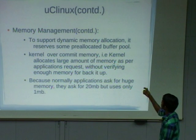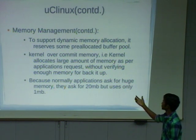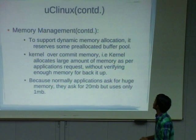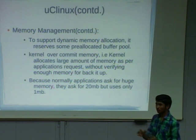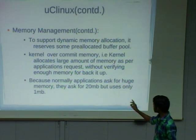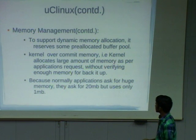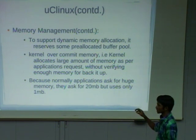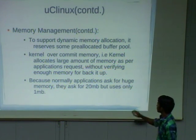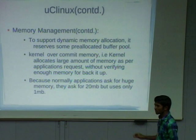How does UC Linux support dynamic memory allocation? To support it, they use pre-allocated buffer pools. One more problem is kernel over-commit memory. Applications ask for large amounts of memory — for example, if an application asks for 20 MB but only uses 1 MB. With an MMU present, it takes care of reallocating unused memory to another process. But here there is no MMU, so the kernel does not know — whenever an application requests 20 MB, it simply allocates that 20 MB. This is the over-commit problem.